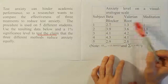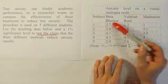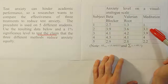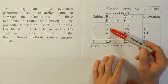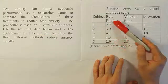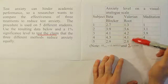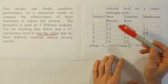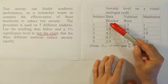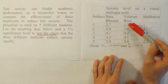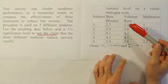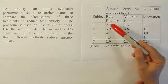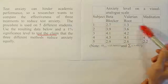You can tell that this is a dependent scenario, because subject 1 tries all the treatments, subject 2 tries all the treatments. It's not independent groups trying the beta blocker, or independent groups trying the valerian root, or independent groups trying meditation. They're each trying every treatment to see how it affects them.